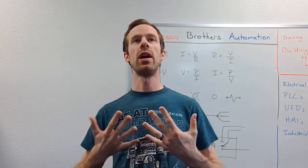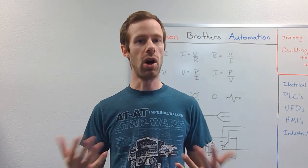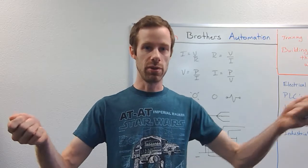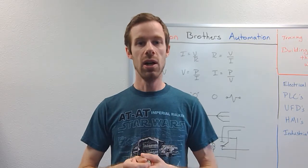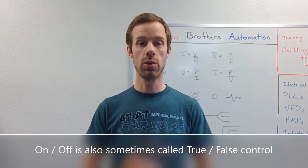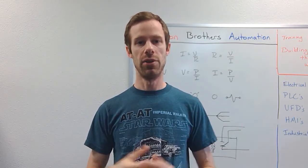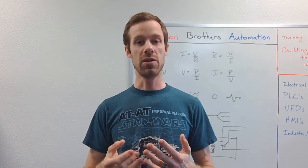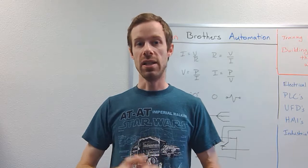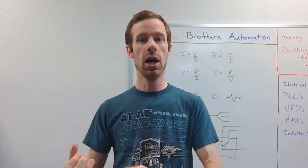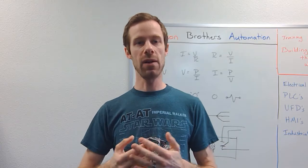The easiest way to see control on a day-to-day basis is the light switch. The light switch in your house is that on/off kind of control. Even a three-way switch — where you might have two or sometimes three different switches controlling the same light — can still be considered an on/off switch because that's the behavior of the light: on or off, or what we call true/false control. That type of control has a response of either 100% on or 0% on, with no in between.